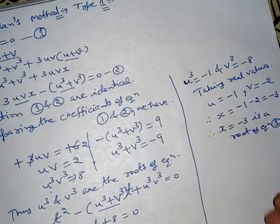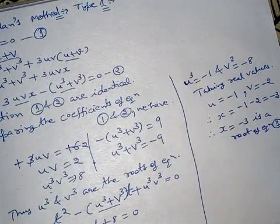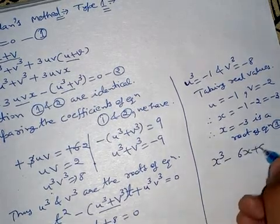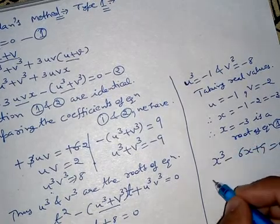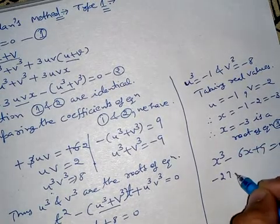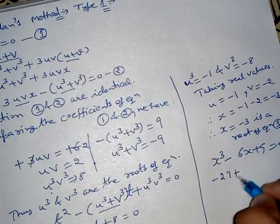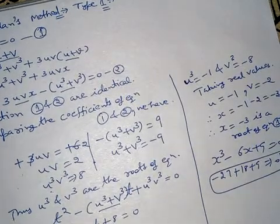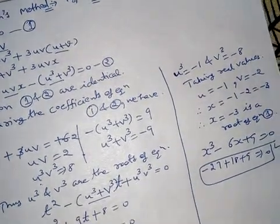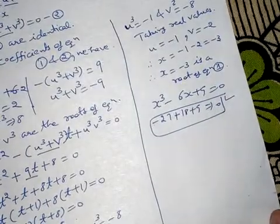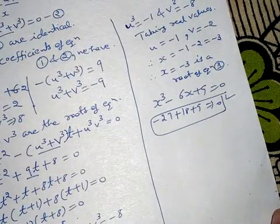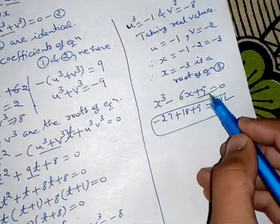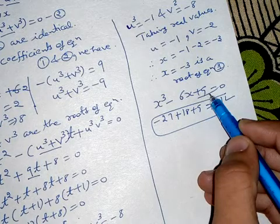Therefore x equals minus 3 is a root of equation one. Let us verify: substituting x equals minus 3 into x cubed minus 6x plus 9 gives minus 27 minus (minus 18) plus 9 equals minus 27 plus 18 plus 9 equals 0. So x equals minus 3 is correct. Now we are going to use synthetic division to find the remaining roots, since x cubed minus 6x plus 9 equals 0.